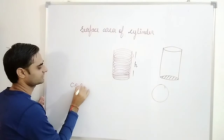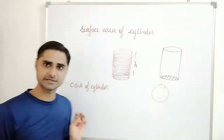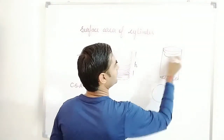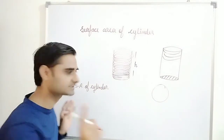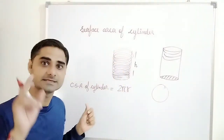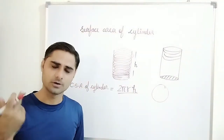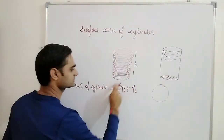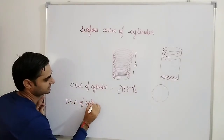First of all we will talk about the curved surface area — CSA means curved surface area of a cylinder. The curved surface area is the round surface. One circle has circumference 2πr, and we multiply by the height, so the curved surface area is 2πrh.